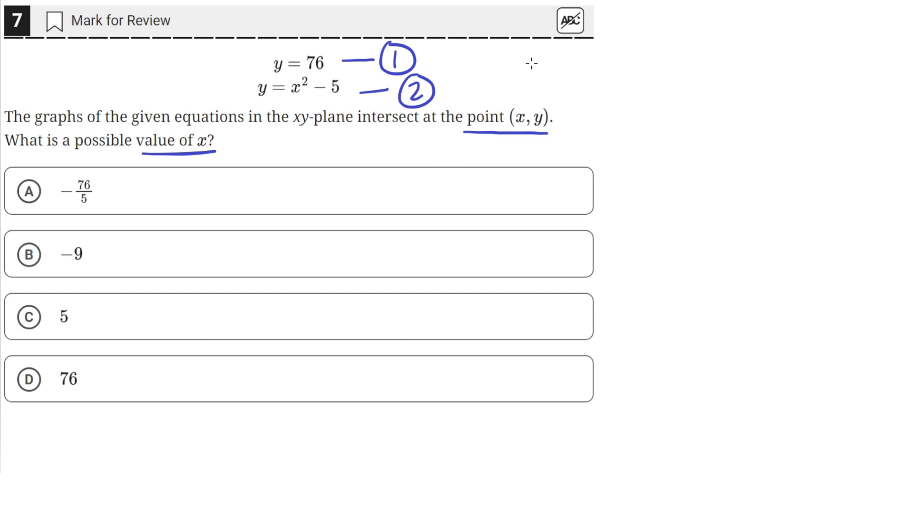So y equals 76, if we draw that on the xy-plane here, we'll make some axes, x, y. So y equals 76, it's just setting y equal to some constant, is just a horizontal line in the xy-plane. So it'll look something like this, just a horizontal line.